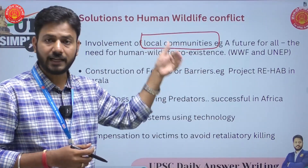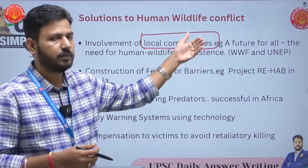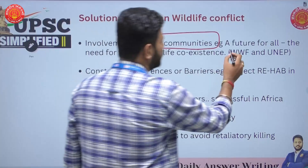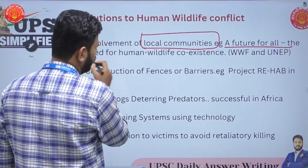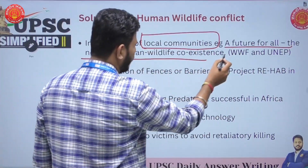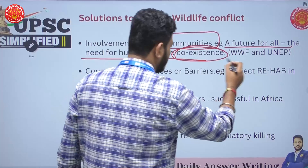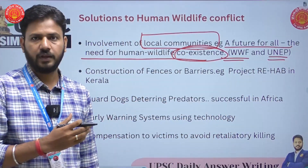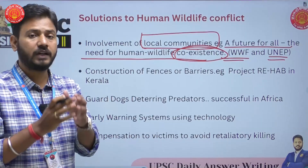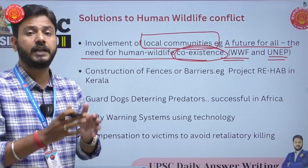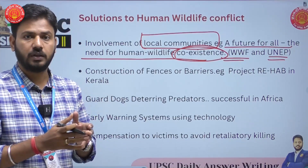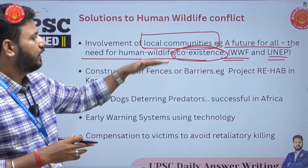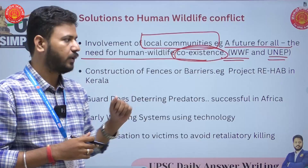This is actually suggested by UNEP and WWF. There was a report in 2021 by the name 'Future for All: The Need for Human-Wildlife Coexistence.' WWF and UNEP are focusing on coexistence — they are of the clear view that human-wildlife conflicts cannot be completely stopped, and humans or people living around the forest need to be trained in coexistence.